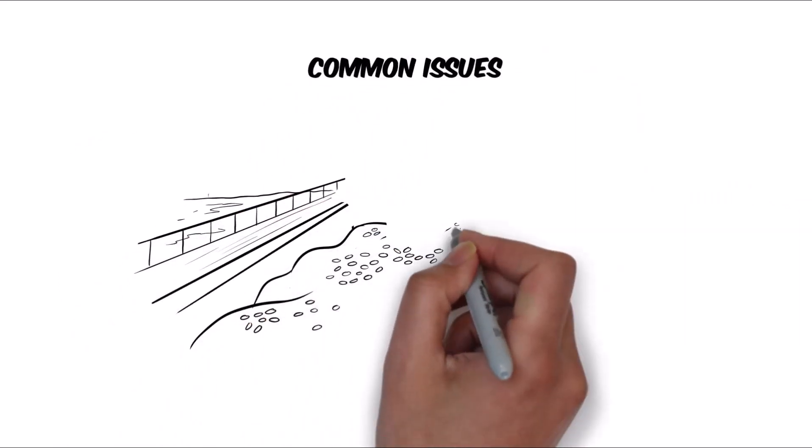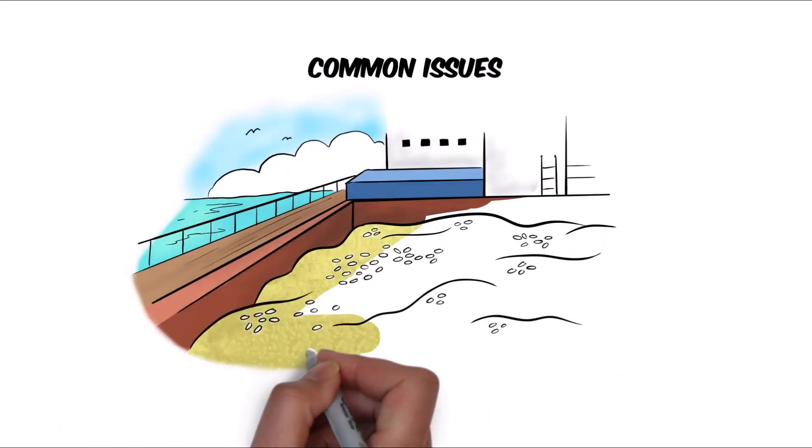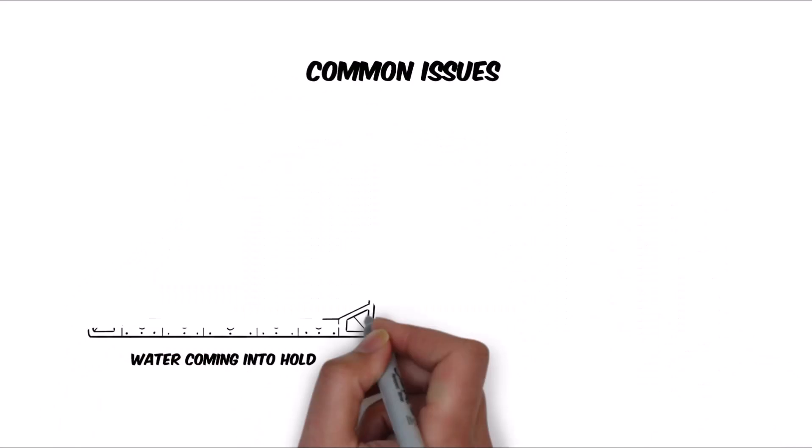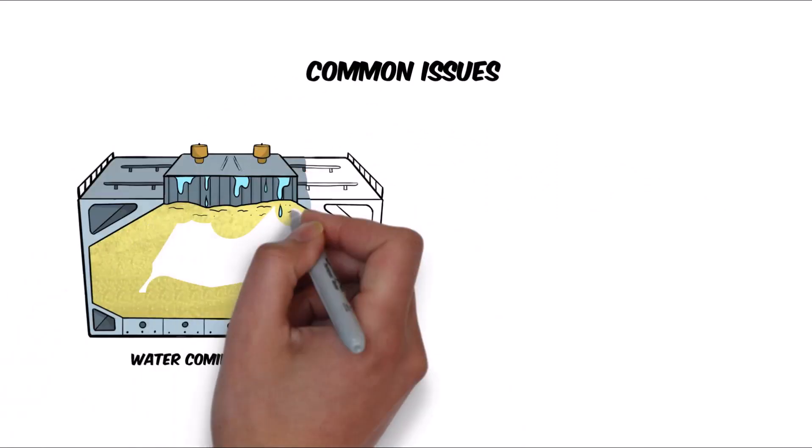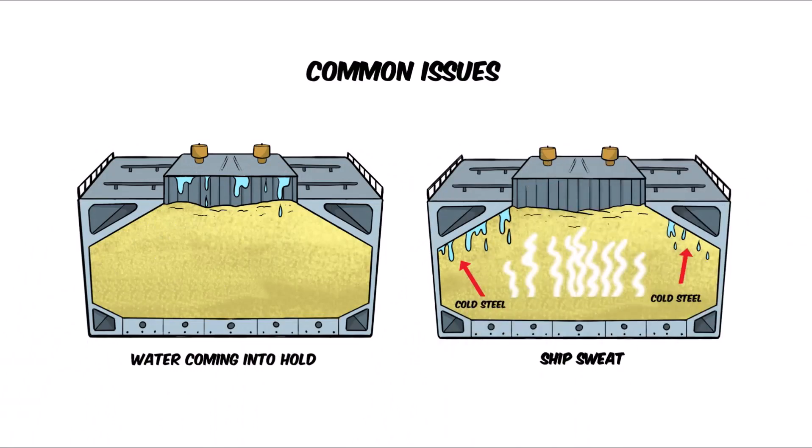Water ingress via leaking hatches or sweating can make the tablets produce excessive heating and phosphine gas. A smouldering cargo may ignite the phosphine gas causing a smoke explosion.